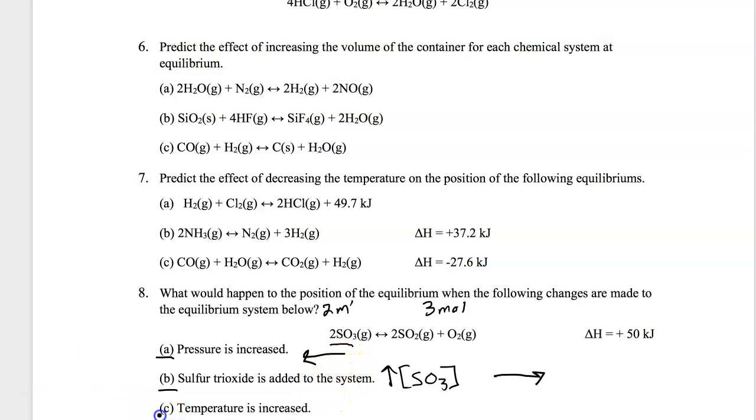For C, if we increase the temperature, we have to note whether this is endothermic or exothermic. And this, with a positive delta H, is endothermic or heat as a reactant.